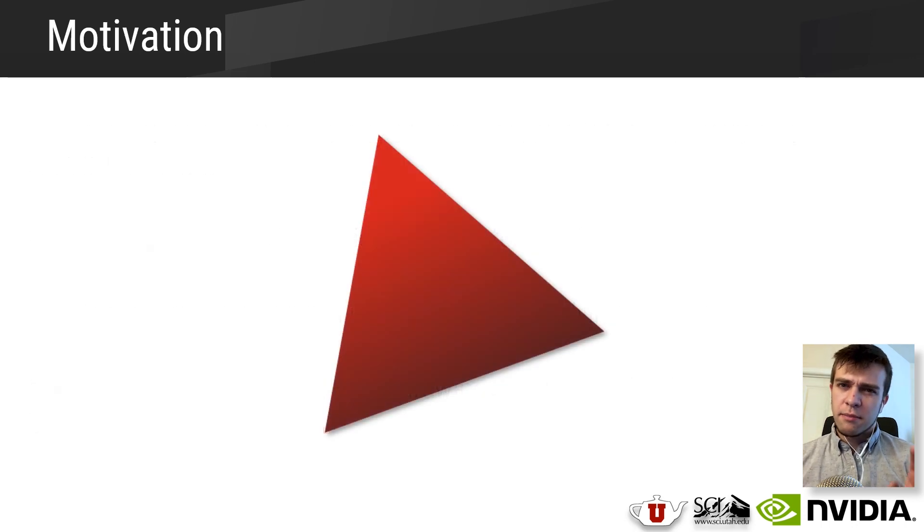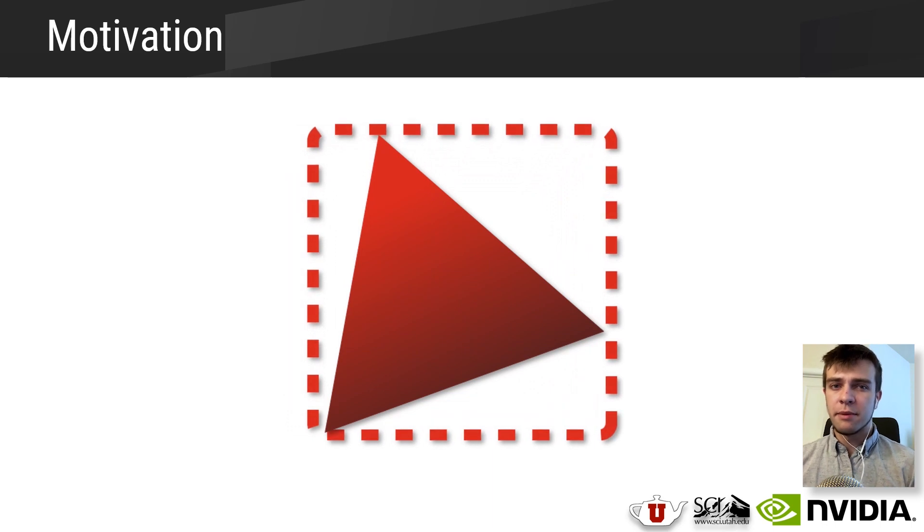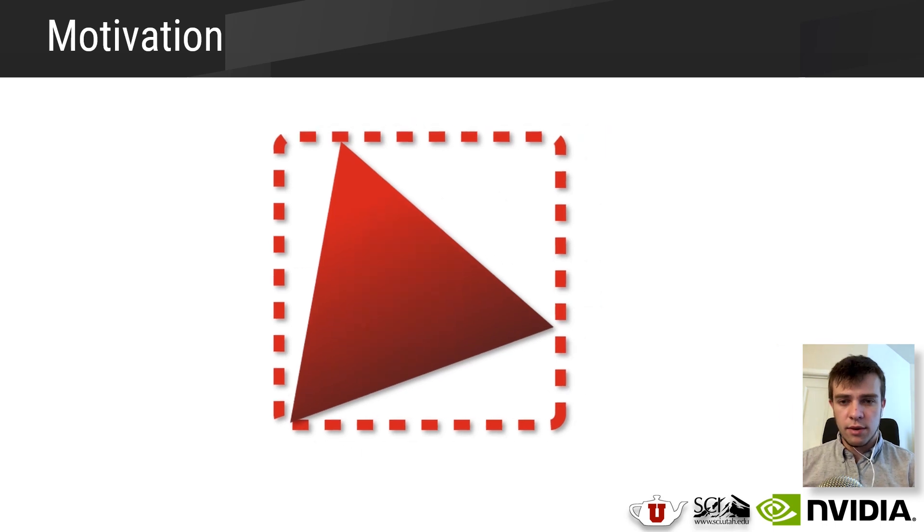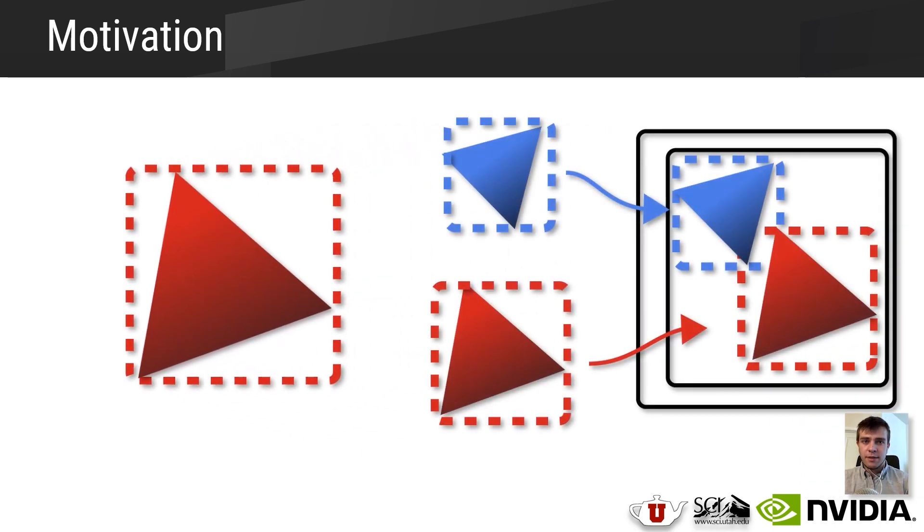Most modern bounding volume hierarchies usually use an axis-aligned bounding box to approximate the underlying primitives. These axis-aligned bounding boxes are relatively easy to compute. You can just take the minimum in X, Y, and Z of your primitive, the maximum in X, Y, and Z, and those minimum and maximum corners then implicitly represent an axis-aligned bounding box. As a result, these boxes are relatively few bytes to store, since you only need those two opposing corners.